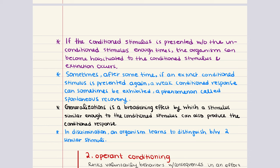Just because a conditioned response has been acquired, it does not mean that it is permanent. If the conditioned stimulus is presented without the unconditioned stimulus enough times, the organism can become habituated to the conditioned response and extinction can occur. So if the bell rings enough times and the dog notices it's not getting any meat, the dog may stop salivating when the bell sounds. Also, this extinction can be undone — it is not always permanent. After some time, if an extinct conditioned stimulus is presented again, a weak conditioned response can sometimes be exhibited. This is known as spontaneous recovery.